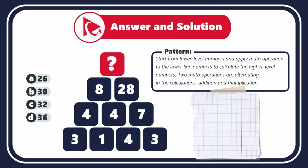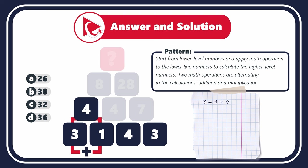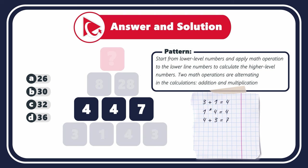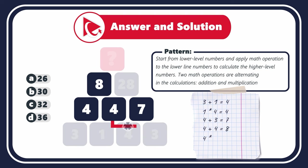Let's look at an example using the numbers in the bottom left corner. 3 plus 1 equals 4. But 1 multiplied by 4 equals 4 — remember, addition and multiplication are alternating. So the next operation would be addition: 4 plus 3 equals 7. Moving to row 2: 4 plus 4 equals 8.